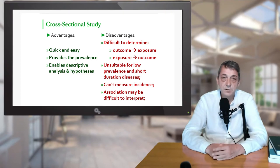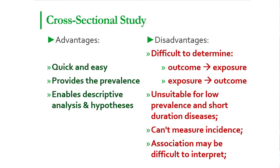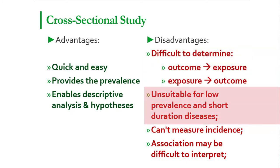The advantages of cross-sectional studies are that they are relatively quick and easy to conduct, they provide information on prevalence among the studied population, and they provide information for descriptive analysis and for generating hypotheses. The disadvantages are that it is difficult to determine whether the outcome followed exposure in time or exposure resulted from the outcome. They are not suitable for studying diseases with low prevalence or short duration, because during the snapshot those diseases may no longer exist.